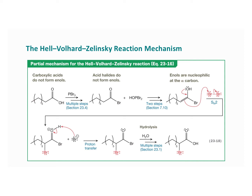The acid halide then in two steps forms the enol, and that is what reacts with Br2 through an SN2 reaction. Then there's a proton transfer, followed by hydrolysis — again multiple steps covered in section 23.1 — and you end up with a carboxylic acid. If asked to do this mechanism on a test, you'd be expected to show the steps from the enol through to the product, applying keto-enol tautomerization from chapter seven.